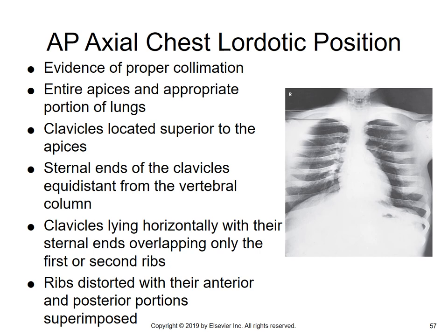The lordotic chest looks really strange — the ribs are very horizontal. The clavicles are up above the apices. Evidence of proper collimation includes entire apices and appropriate portion of the lungs seen. Clavicles are located superior to the apices. Sternal ends of clavicles equidistant from vertebral column. Clavicles lie horizontal with their sternal ends overlapping only the first or second ribs. Ribs are distorted with their anterior and posterior portions superimposed — because when leaning backwards and the rays come in straight, the anterior and posterior portions of the ribs become superimposed.